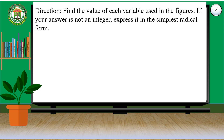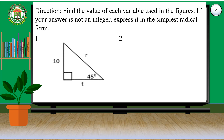Find the value of each variable used in the figures. If your answer is not an integer, express it in simplest radical form. For number 1, find the value of R and T. And number 2, find the value of A and B.